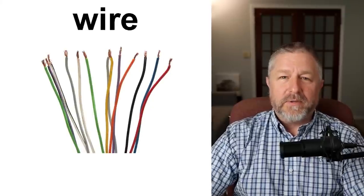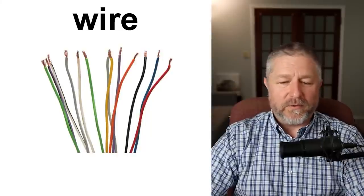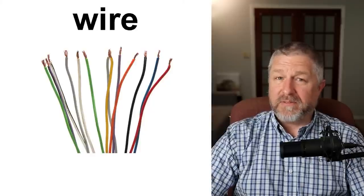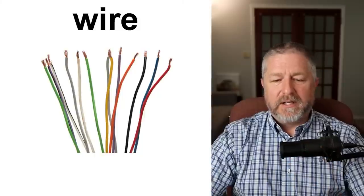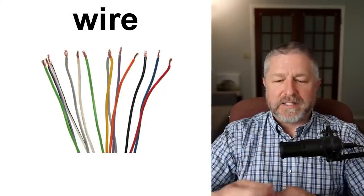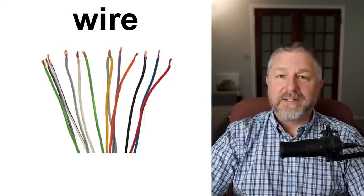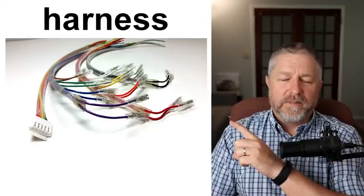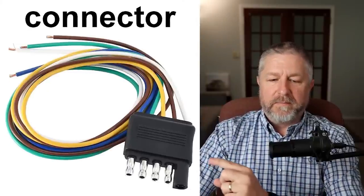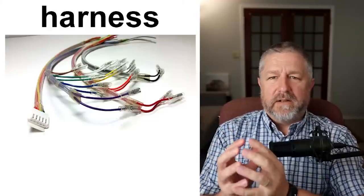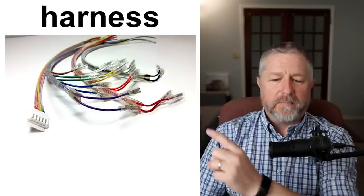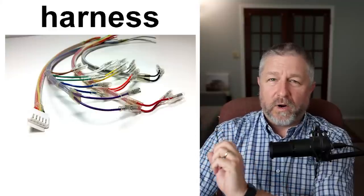Some basic things. Anytime you need electricity in a piece of equipment or a vehicle, you would use wires. Wires generally have copper on the inside — we sometimes call it copper wire. If you want your signal lights or turning signals to work on a vehicle, there has to be a wire going to that light. When you have a whole bunch of wires together with a connector on the end, we would call this a wiring harness. In a vehicle there are so many wires that they sometimes all come to the same place.